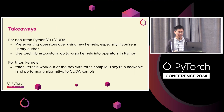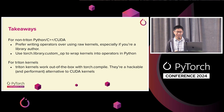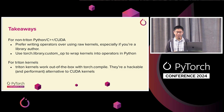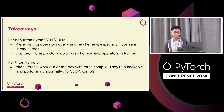In conclusion, here are the key takeaways. If you have a custom kernel in Python, C++, or CUDA, we'd really prefer you to write a custom operator, especially if you're writing a library — it's just easier for the next person to see an operator instead of a raw kernel. For Triton kernels, the recommendation is flipped: user-defined Triton kernels work out of the box with Torch.compile, and you should try to use Triton kernels instead of CUDA kernels when you can — they're really hackable and you can get CUDA kernel-level performance without even needing to touch C++. Thanks everyone for being here.